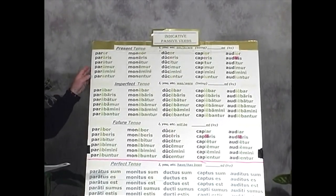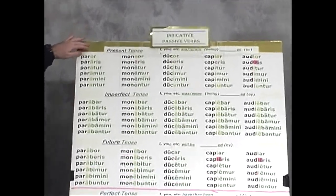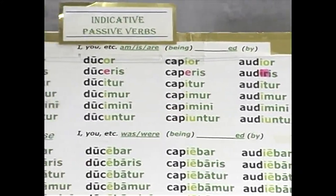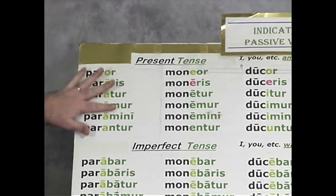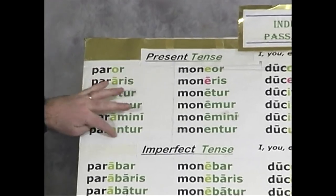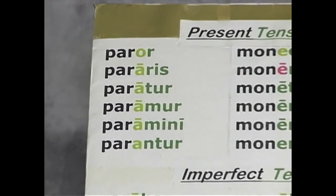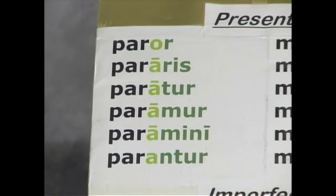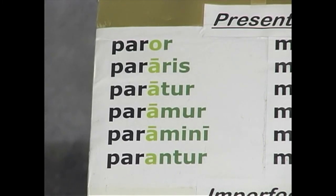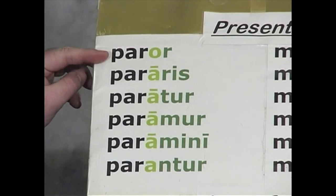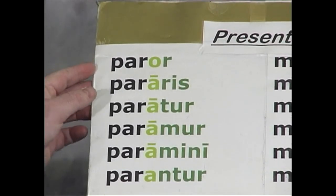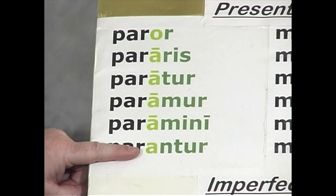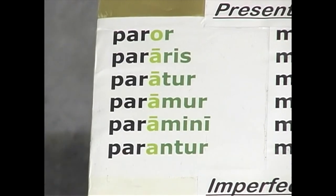Now let's look at that system. This is first, second, third, third-io, and fourth conjugation. To form the present passive indicative in Latin, you add the passive personal endings to the verb stem. The verb stem for paro is found by going to the infinitive and dropping off -re, giving us para- all the way through, then adding the passive personal endings.